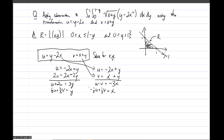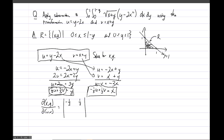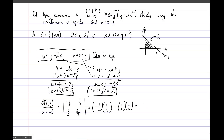We have formulas for x and y in terms of u and v, so we can compute the Jacobian — the partial derivatives of x and y with respect to u and v. Staring at the x formula, the partial derivatives are negative one-third and positive one-third. For the y formula, the partial derivatives with respect to u and v are one-third and two-thirds. Computing the 2 by 2 determinant: negative one-third times two-thirds minus one-third times one-third gives negative two-ninths minus one-ninth, which equals negative three-ninths, or negative one-third.